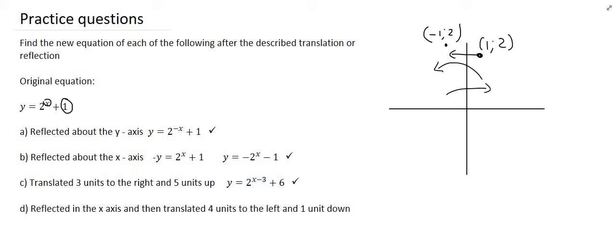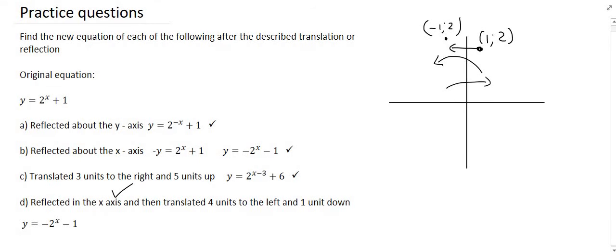And the last part of this is the graph must first be reflected in the x-axis and then translated four units to the left and one unit down. So let's take the answer from B which was the answer that we got when we reflected it in the x-axis. So here we have the reflected in the x-axis form and then we need to translate it four units left and one unit down. So remember the one unit down, that's just going to modify this part, and then four units to the left is your x shift so that's going to modify there. Always remember when you're shifting left and right it's opposite to what you would think.